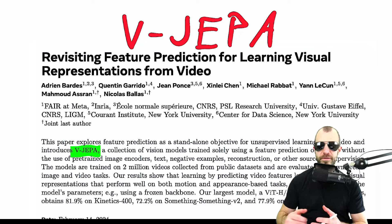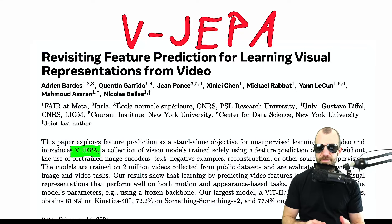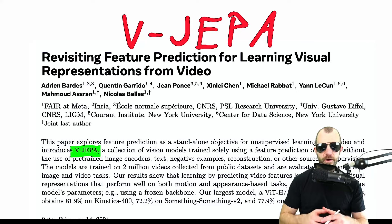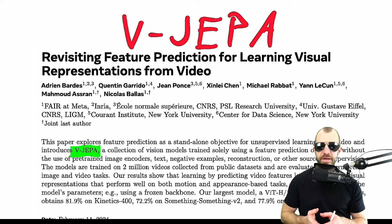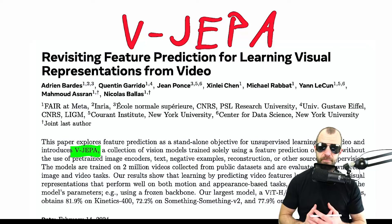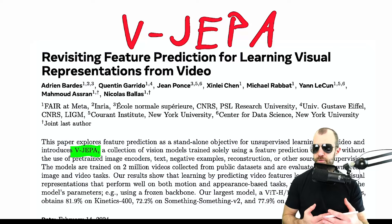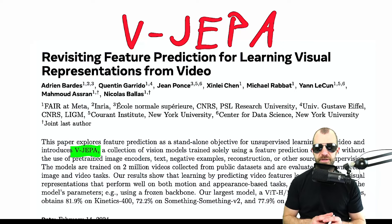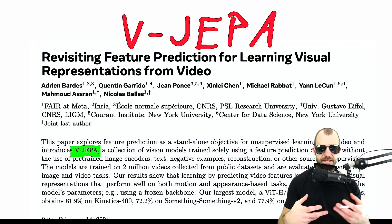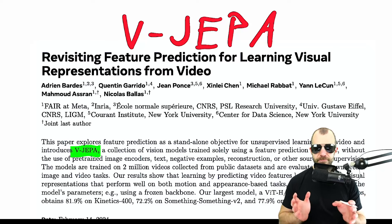V-JEPA is a variant of the JEPA architecture originally proposed by Yann LeCun, built on the hypothesis that feature prediction is a very good tool for unsupervised learning from data. In essence, this is an unsupervised technique to learn good features from video data. By good features, we mean latent features you can then use to make downstream tasks better — for example, video classification, topic classification, or fine-tuning for various extraction tasks.